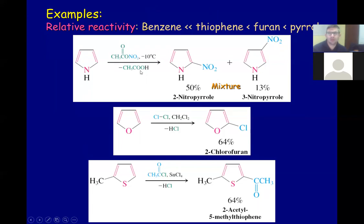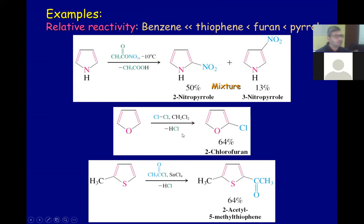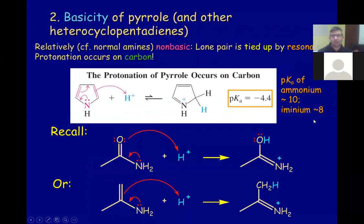Pyrrole is the most reactive, then furan and thiophene, but they are all much more reactive than benzene due to the availability of the lone pair. Pyrrole has a lone pair that can easily be shared in the ring. The starting materials differ — nitrous acid and highly reactive reagents are used, but the conditions for heterocycles are milder: here you are actually cooling down, whereas for benzene you need to reflux. You can still use similar reagents — HNO3 and H2SO4 — but conditions will be different.